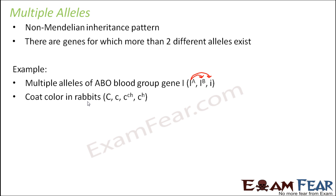Another example is the coat color in rabbits. Quite a few varieties of coat color are seen in rabbits — some are gray, some are dark gray, and some are completely white. It has been found that the gene responsible for coat color has four alleles.